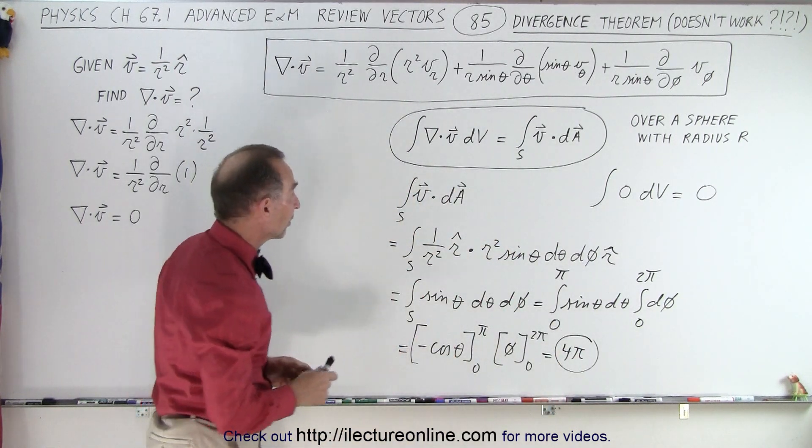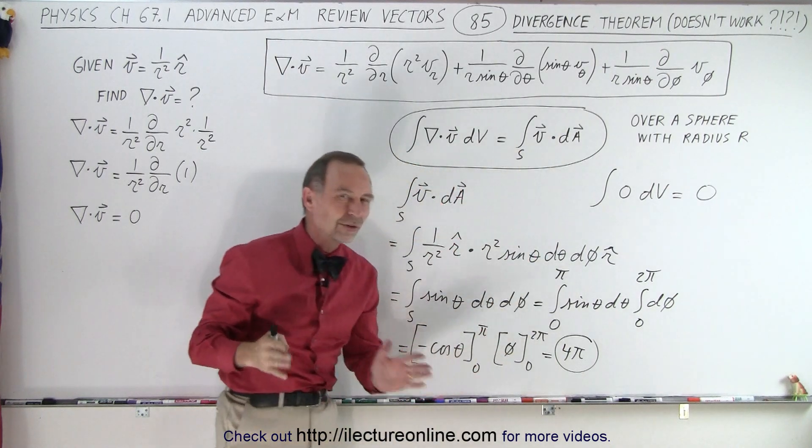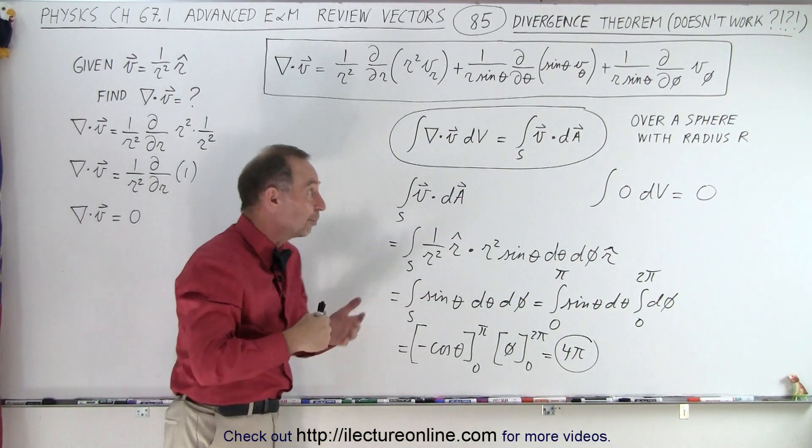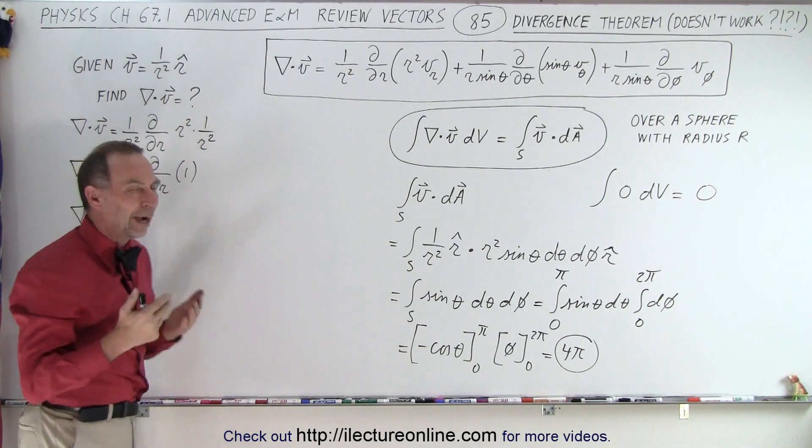So we can see here that on the left side we get 0. On the right side we get 4 pi. So why doesn't the divergence theorem work in this particular case? Is there something strange about this function? Why it doesn't work?